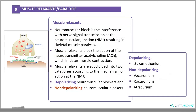After induction, we need to use muscle relaxants to allow us to intubate our patients. Muscle relaxants are classified into two classes: depolarizing neuromuscular blockers and non-depolarizing neuromuscular blockers. Neuromuscular blockade is the interference with nerve signal transmission at the neuromuscular junction, resulting in skeletal muscle paralysis. These muscle relaxants work by blocking the action of the neurotransmitter acetylcholine, which initiates muscle contraction. The common depolarizing neuromuscular blocker is suxamethonium or succinylcholine, while non-depolarizing agents include vecuronium, rocuronium, and atracurium.